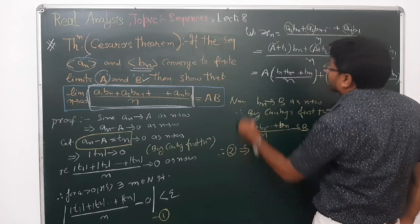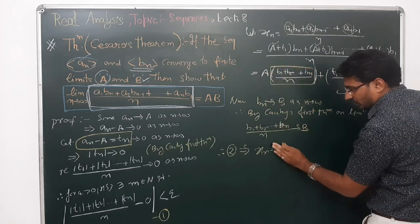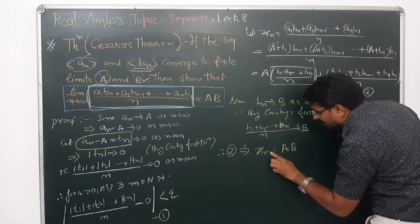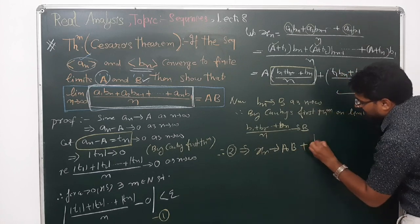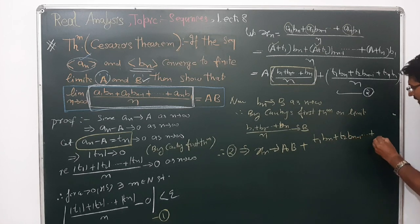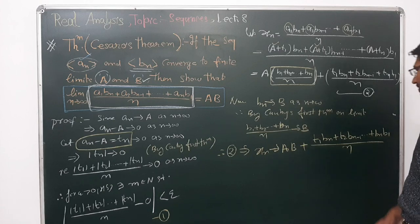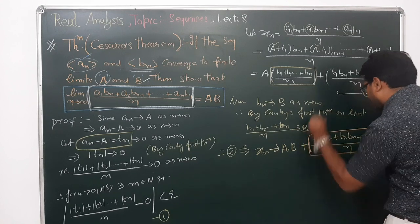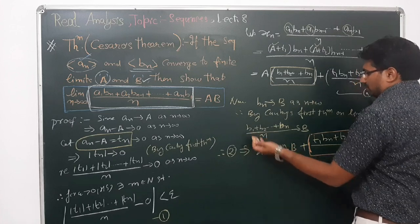So from equation two, x_n has the part a·(b_1 + b_2 + ... + b_n)/n which converges to a·b. But there remain the cross terms (t_1·b_n + t_2·b_{n-1} + ... + t_n·b_1) divided by n. If this remaining expression approaches zero, then we can say x_n converges to a·b. So our target is to show this expression converges to zero.